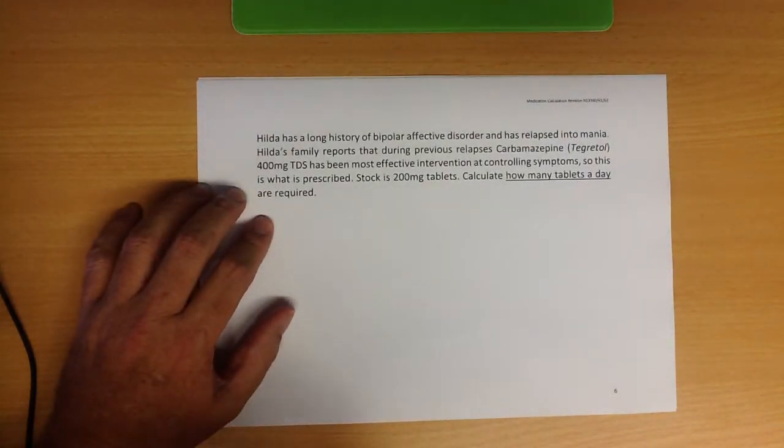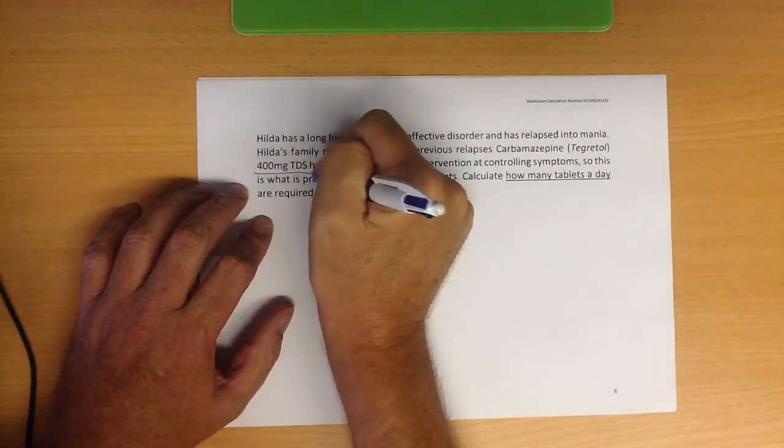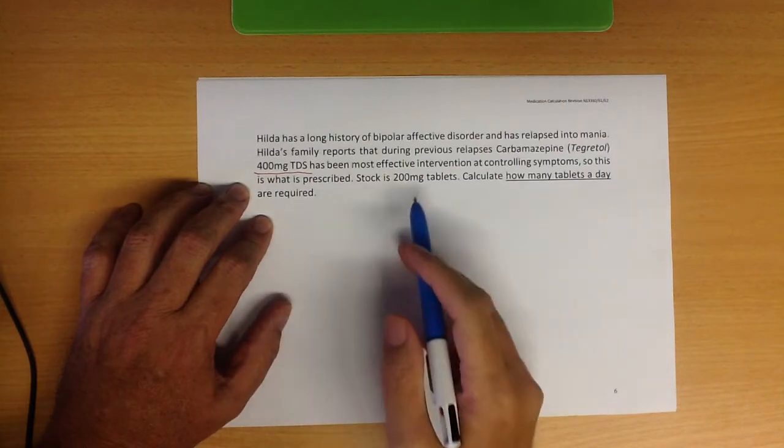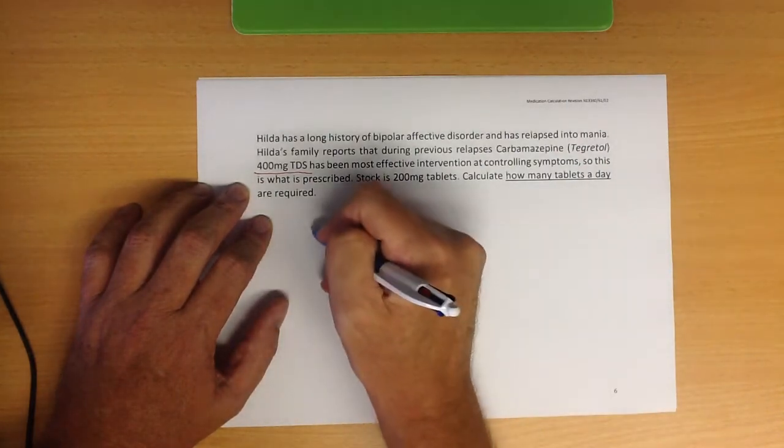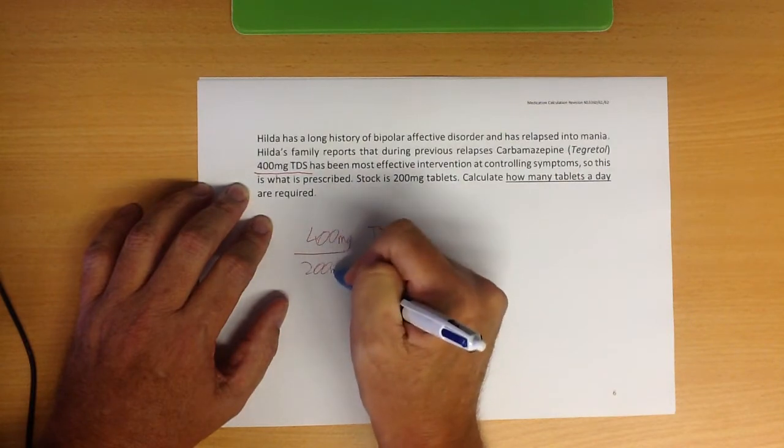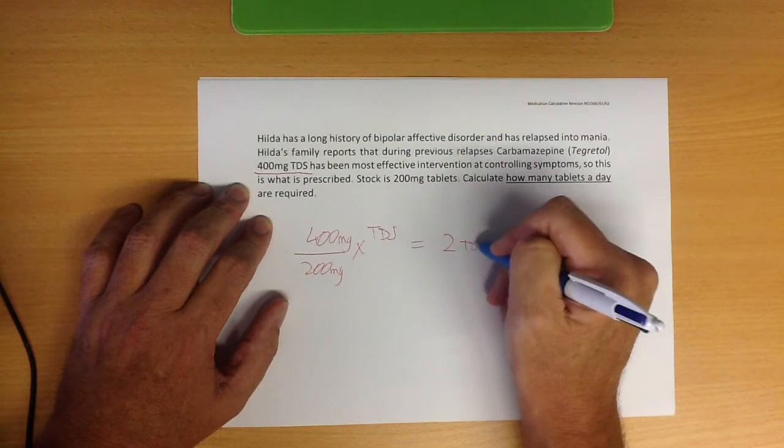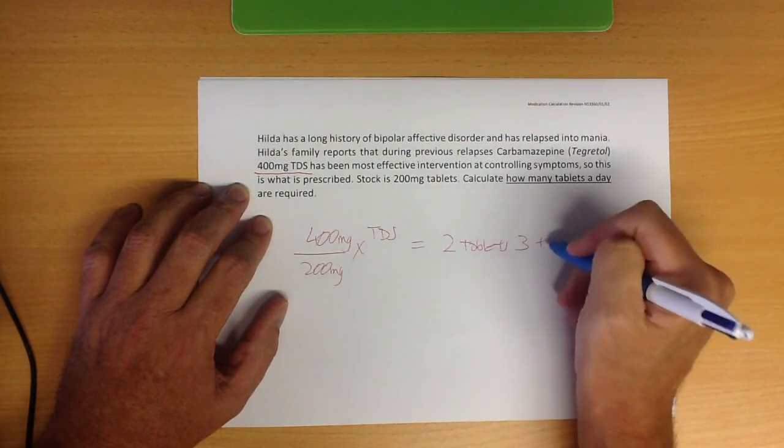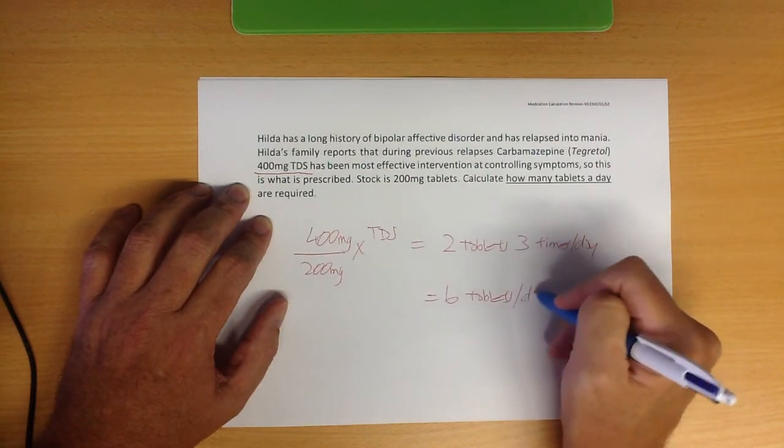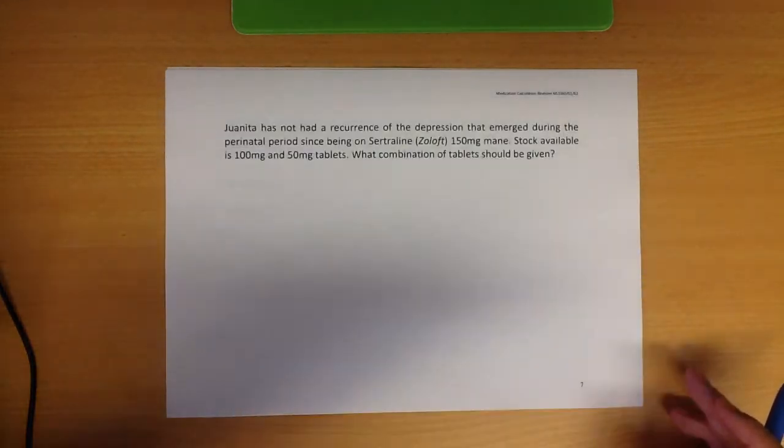Hilda has a long history of bipolar affective disorder and has relapsed into mania. Hilda's family reports that during previous relapses, carbamazepine 400 milligrams TDS has been the most effective intervention at controlling symptoms. So this is what is prescribed. Stock is 200 milligrams. Calculate how many tablets a day are required. So what we want is 400 milligrams TDS and what we've got is 200 milligrams. So that would be two tablets three times a day equals six tablets a day. Again, I don't think any of this maths is going to freak too many people out.